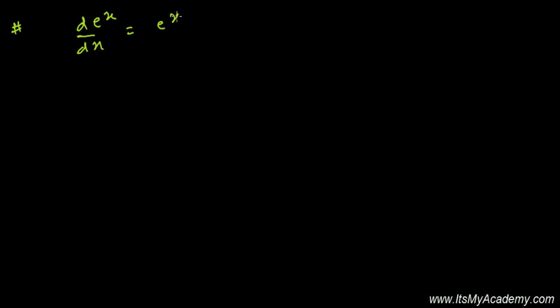Now here are some common general functions. For the exponential function, the derivative of e to the power x with respect to x is e to the power x itself. So from here, the integration formula becomes: the integral of e to the power x dx equals e to the power x plus some constant.